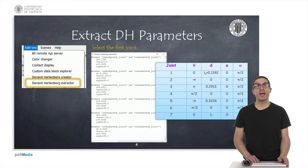CopelliaSim includes an add-on that allows to extract the Denavit-Hartenberg parameters. Once we activate this add-on, we need to select the first joint, and then a window will appear displaying information of the Denavit-Hartenberg parameters related to the transformation of the joints.